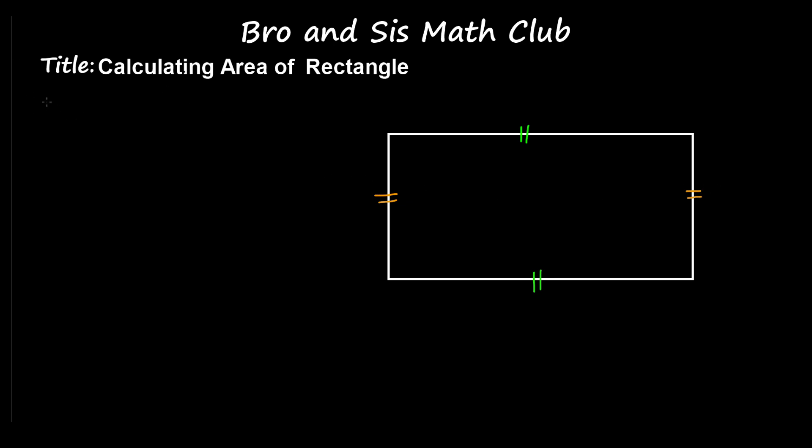So A, which is area, equals length times width. Where's the length? Well, length is how long the rectangle is and the width is how wide the rectangle is.